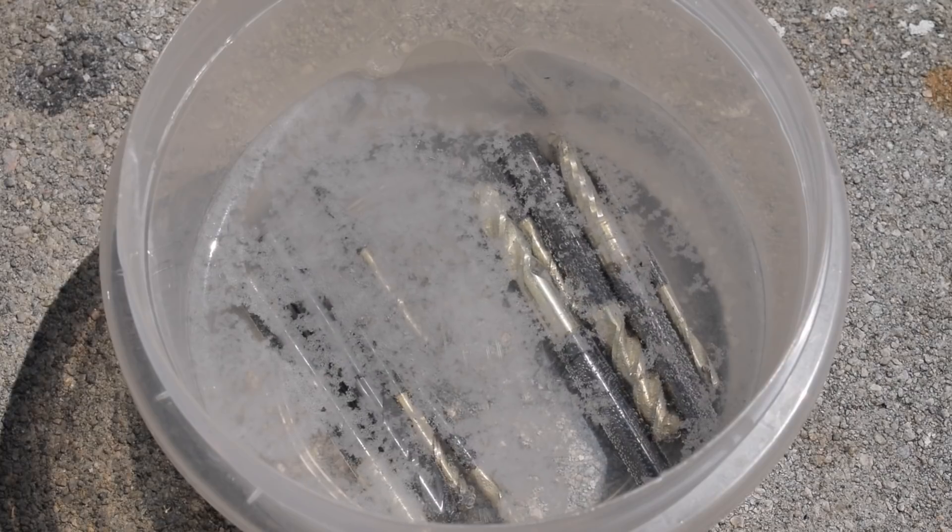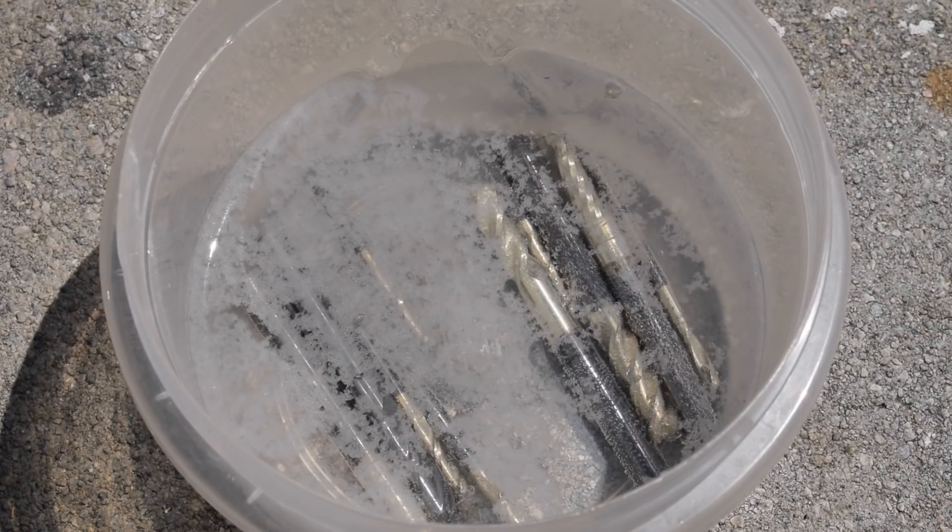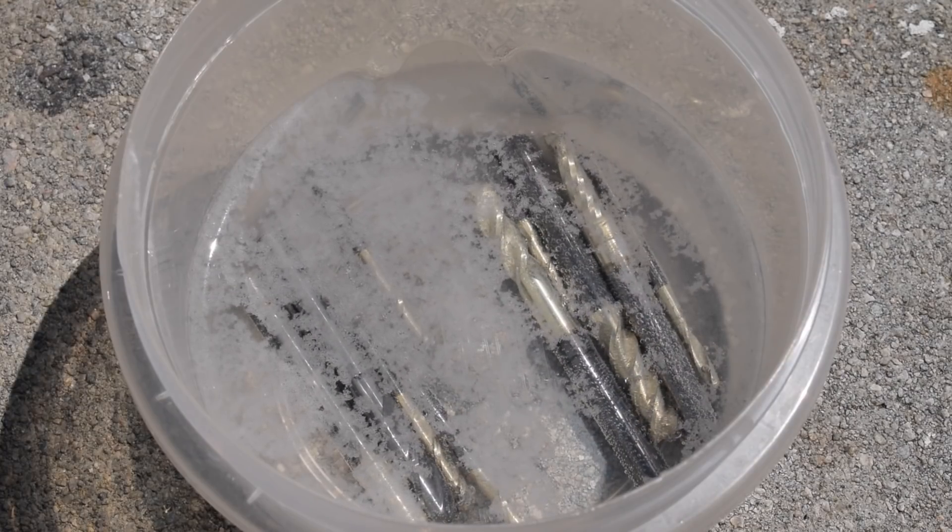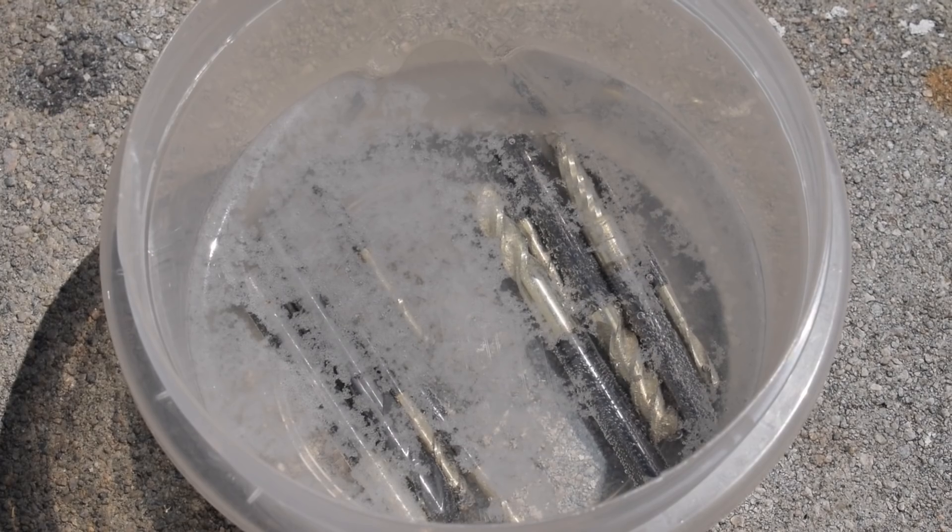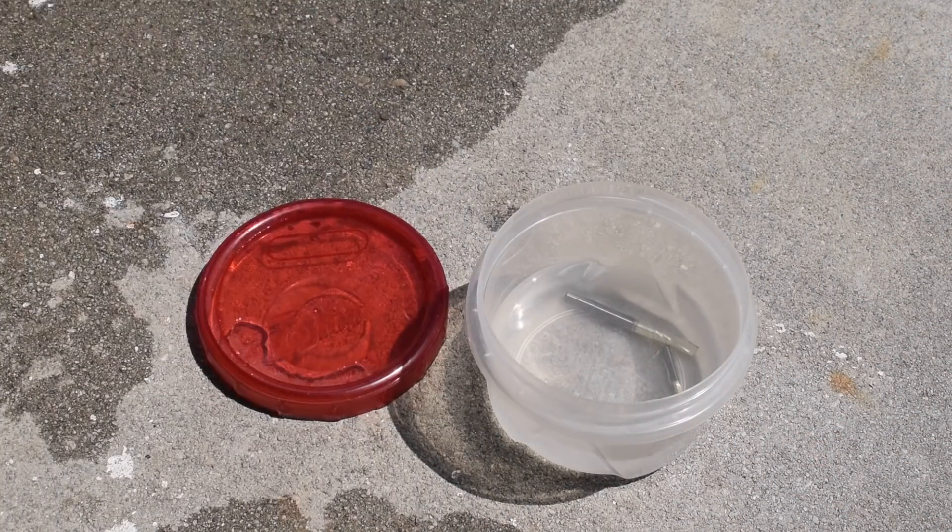You'll see bubbles forming as the reaction takes place. After about five to ten minutes of soaking, depending on your concentration of sodium hydroxide, your ZRN coated end mills should be returned to their bright gold finish.